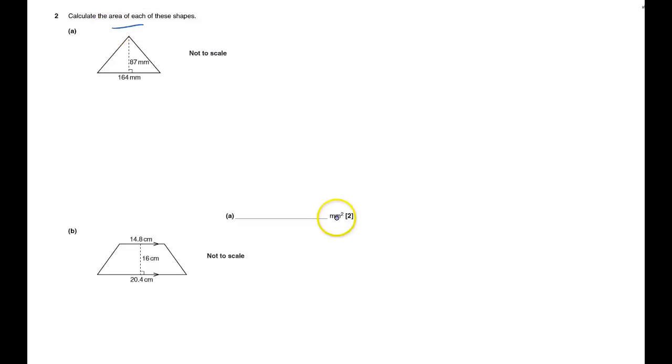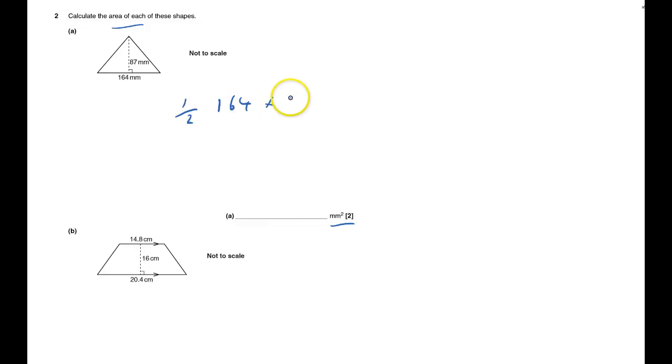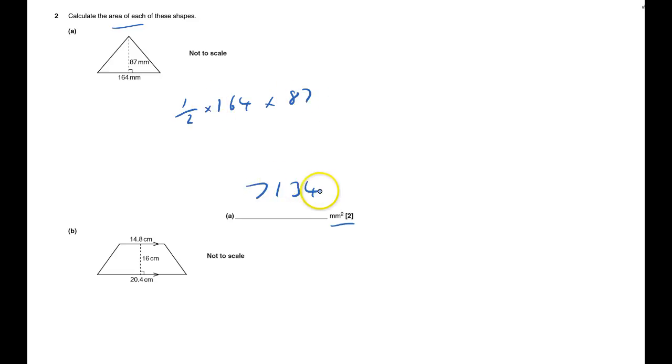The area of this is in millimeters — one millimeter squares, I don't change the units. Half the base is 164 times the height 87. Half of that — 'of' means times — and that is 7134. To work out this for the trapezium, the area formula is in the formula sheet.